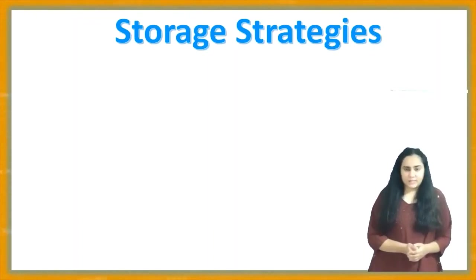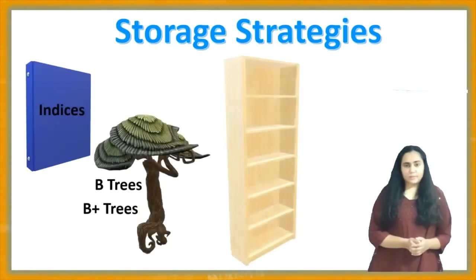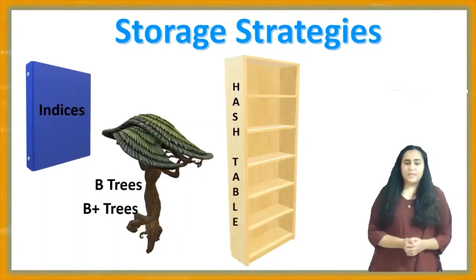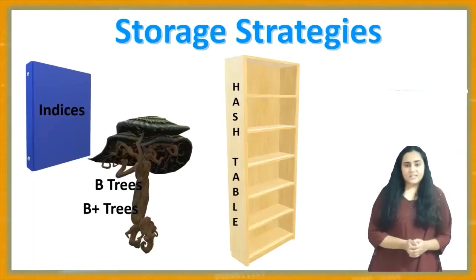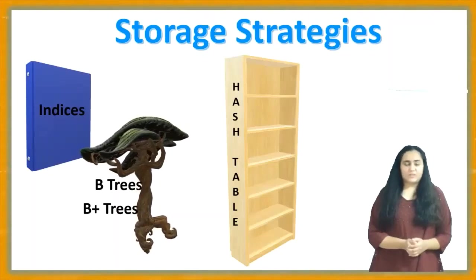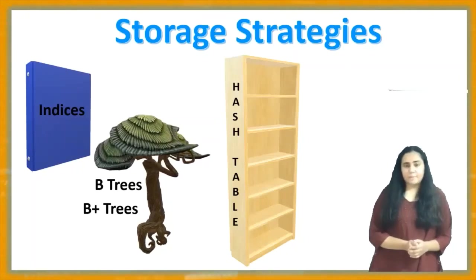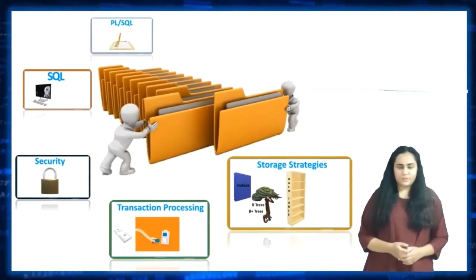We use data structures like indices, B trees and B plus trees, and hash tables. These data structures make DBMS a lot faster and make data retrieval very quick. Indices allow us to access database just the way you would access a textbook using the index when you want to move to a specific topic. B trees, B plus trees, and hash tables are variants of index which allow you to access data much faster than a normal index would.